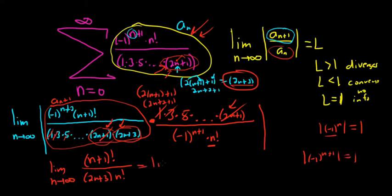This is equal to the limit as n goes to infinity... (n+1)! is (n+1) times n!, so it's (n+1)·n! And then here we have 2n+3 and n!. This is cool because we get limit as n goes to infinity of (n+1)/(2n+3).